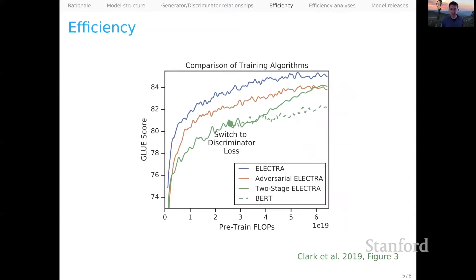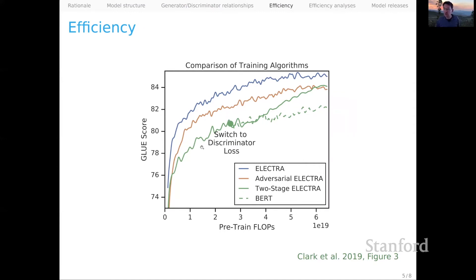They also do a bunch of really interesting efficiency analyses. The paper is oriented toward figuring out how we can train these models more efficiently with fewer compute resources. Along the y-axis is the GLUE score, and along the x-axis we have pre-training FLOPs — the number of compute operations needed to pre-train the model. In blue at the top is ELECTRA, the best model. In orange just below is adversarial ELECTRA, where we train the generator to try to fool the discriminator rather than having the two cooperate. The green lines are also interesting: two-stage ELECTRA starts by training against the BERT objective and at a certain point switches to the ELECTRA objective, and even that is better than continuing with BERT up to the maximum compute budget.